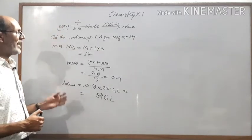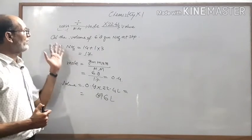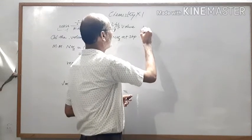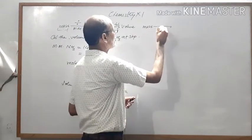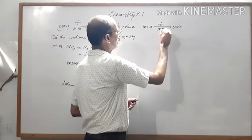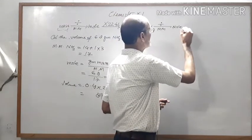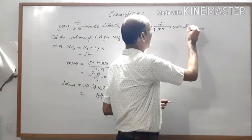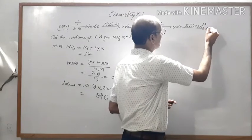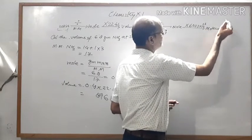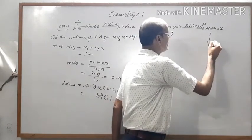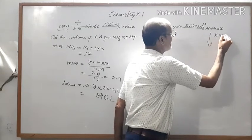Dear student, if you want to find the molecules or atoms from the gram mass of any substance, first the mass is converted into moles by dividing by molecular mass, then converted into molecules by multiplying by Avogadro's number, 6.022 into 10 to the power 23. If you want to find the atoms, multiply further by atomicity.